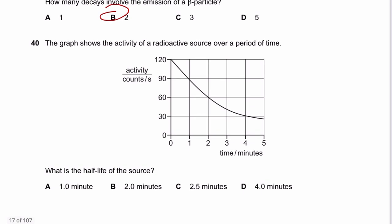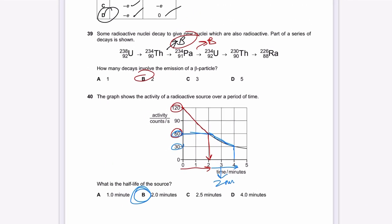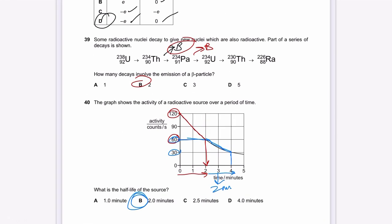Question 40: The graph shows activity of a radioactive source over time. Activity goes from 120 to 60 between 0 and 2 minutes — that's a half-life of 2 minutes. Confirmed: from 60 to 30 also takes 2 minutes. The answer is B: 2 minutes. That completes this paper. If you don't understand anything, please mention it in the comments and I will try my best to get back to you.